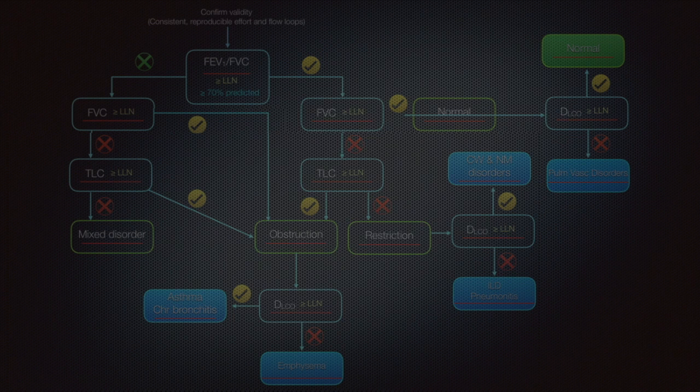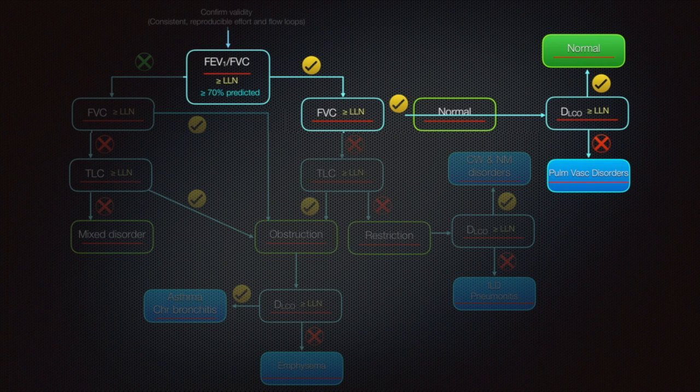Remember earlier we have traced the algorithm to a possible normal PFT. If indicated, proceed with DLCO testing. If that too is normal, we can confidently label it as a normal lung. However, if PFT values are normal with low diffusion capacity, we are looking at possibilities of pulmonary embolism, pulmonary hypertension, or early interstitial lung disease.